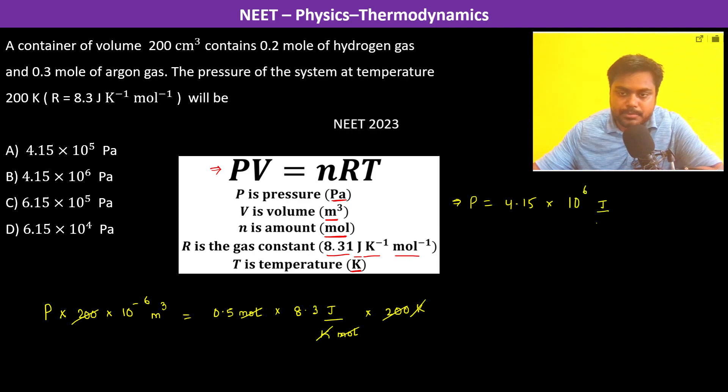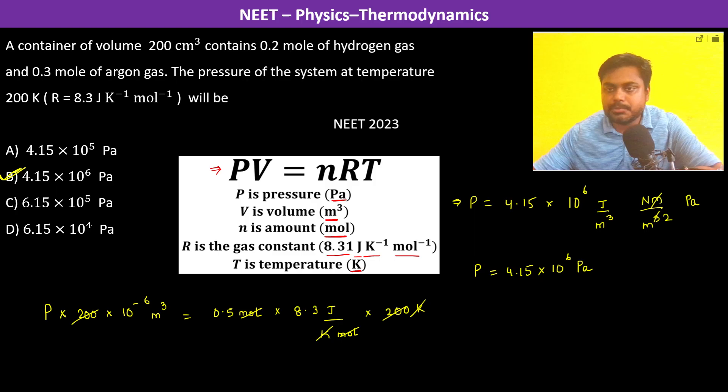Joule per meter cube. Now Joule per meter cube is basically Newton meter per meter cube, which becomes Newton per meter square, which is Pascal. So this is 4.15 into 10 to the power 6 Pascals. This is the pressure, so the option is B.